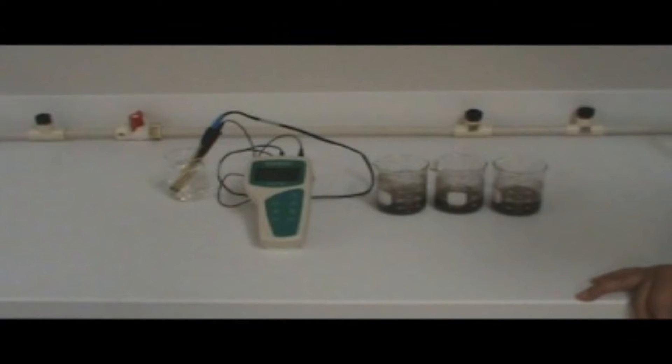you will then require your pH meter, double junction electrode, and ATC probe. Make sure that the meter and electrode are properly calibrated in accordance with the procedure listed in the meter's manual.